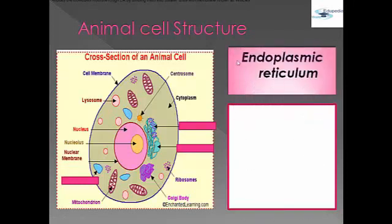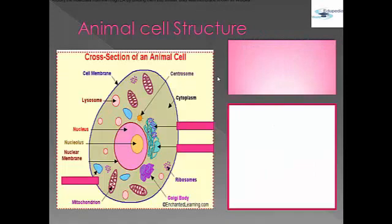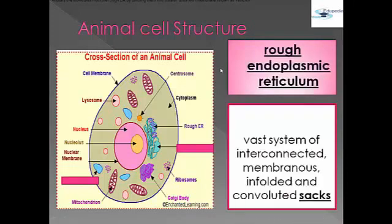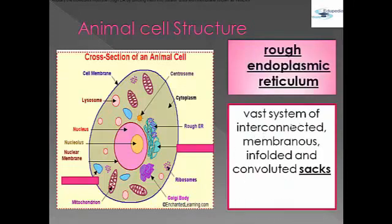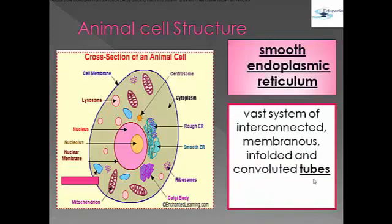Next is the endoplasmic reticulum, which is the transport system of the cell. It has two types: smooth and rough endoplasmic reticulum. The rough endoplasmic reticulum is a vast system of interconnected membranes arranged in folded and convoluted sacs. The smooth endoplasmic reticulum follows a similar structure but is arranged in tubes instead.